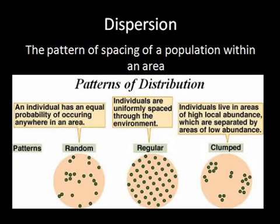So now let's look at population dispersion. Population dispersion is how populations are spread out in an area. There are three patterns of distribution: random, regular, and clumped.